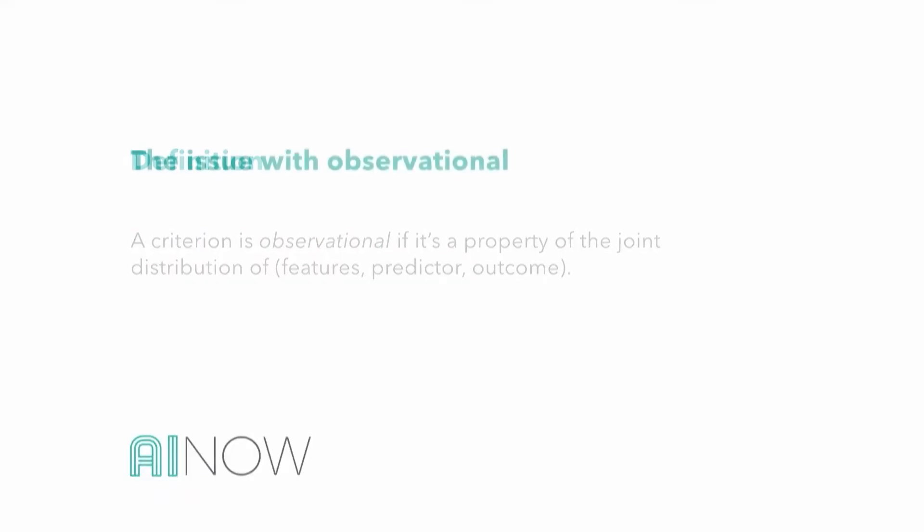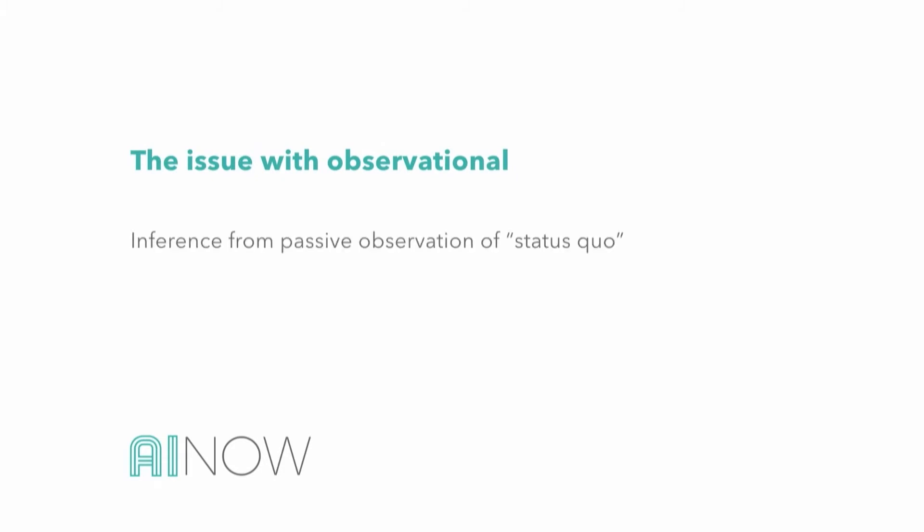So you might ask, isn't that everything? Let me tell you why it's not and why it's actually missing important things. The issue with observational criteria is that they are completely passive — passive inference from what we observe and the way the world is right now. There is no form of intervention in this kind of analysis, no 'what if' consideration. What if I change this? What would happen? It's purely passive.